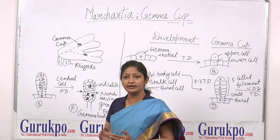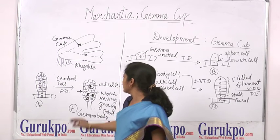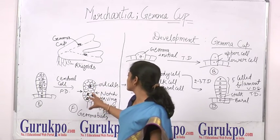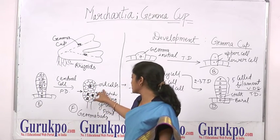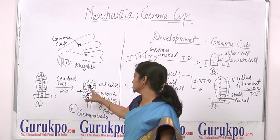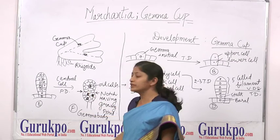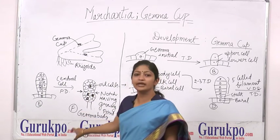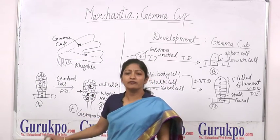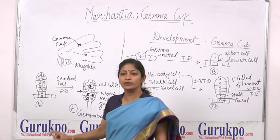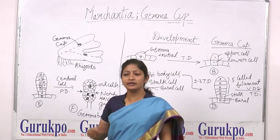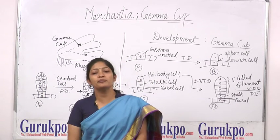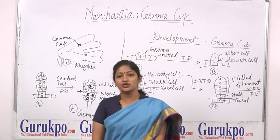The central cell of these filaments undergoes periclinal division, forming two types of cells: outer cells and inner cells. The inner cells are composed of oil cells and different types of cells. This complete structure is called the gemma body.